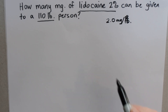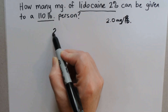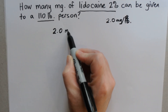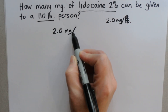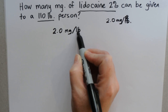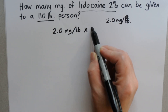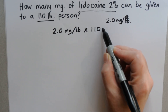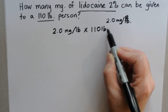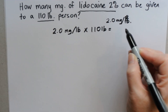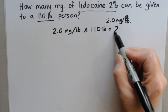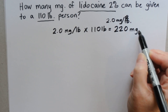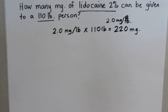So at that point it becomes easy. 2.0 milligrams per pound and we've got 110 pounds — it's just a straight multiplication problem, which means they can have 220 milligrams.